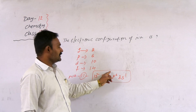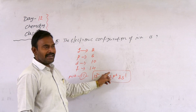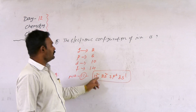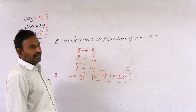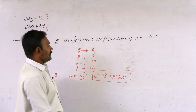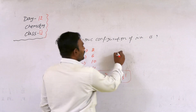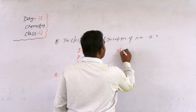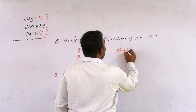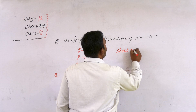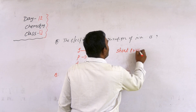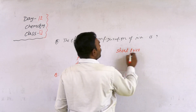Verification: 1 plus 6 equals 7, plus 2 equals 9, plus 2 equals 11. That confirms 11 electrons. Now I will give you a short trick to remember the filling order.